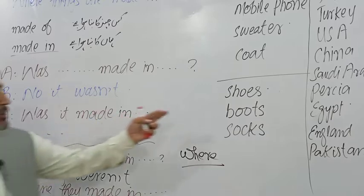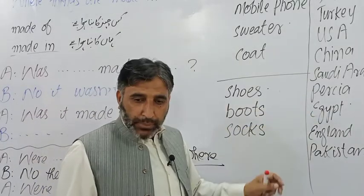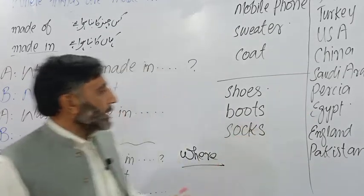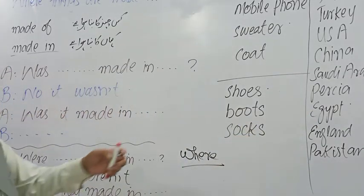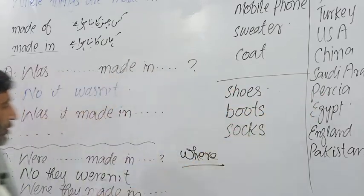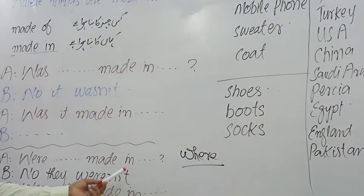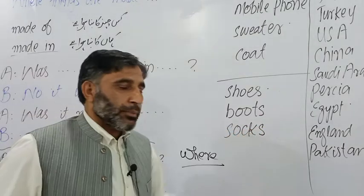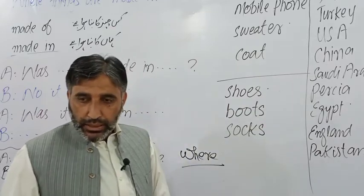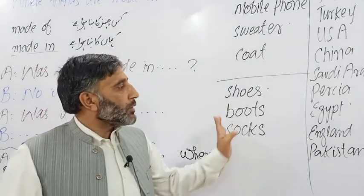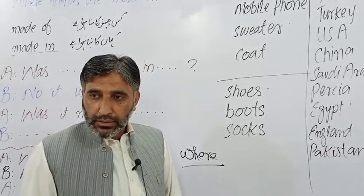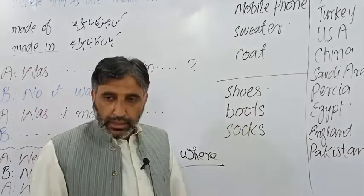Agar ham yeh shoes suppose Egypt ke bane hue hain — Misar — Egypt matlab Misar ke bane hue hain. Yeh shoes. Lekin agar meh aap se puchhlo: Were these shoes made in Persia? No, they weren't. They were made in Egypt. Nahi, yeh Persia — Iran ke nahi bane hue the. They were made in Egypt. Yeh to Misar ke bane hue the. Toh jab plural ho to were kahenge.